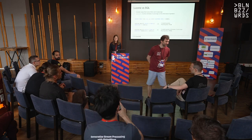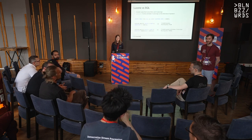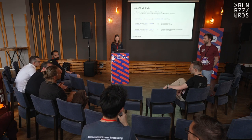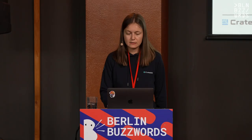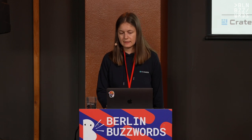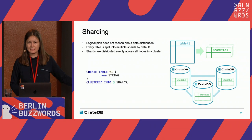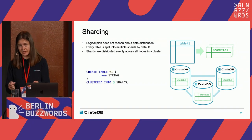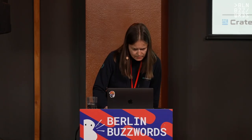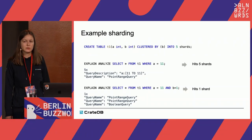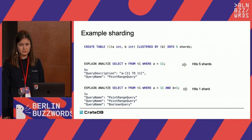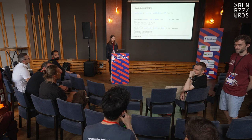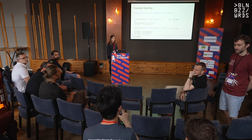Quick question about sharding. In other databases, users can specify a sharding key. In CrayDB, can you only specify the shard number? No — you can specify the sharding key. You can say how many shards you have, and in that case CrayDB will use an internal document ID as the sharding key. But using the CLUSTER BY keyword, you can specify the sharding key explicitly. By specifying the sharding key and using it in a filter, you can hit fewer shards. If you don't specify a sharding key, a written row will be randomly distributed to any shard.